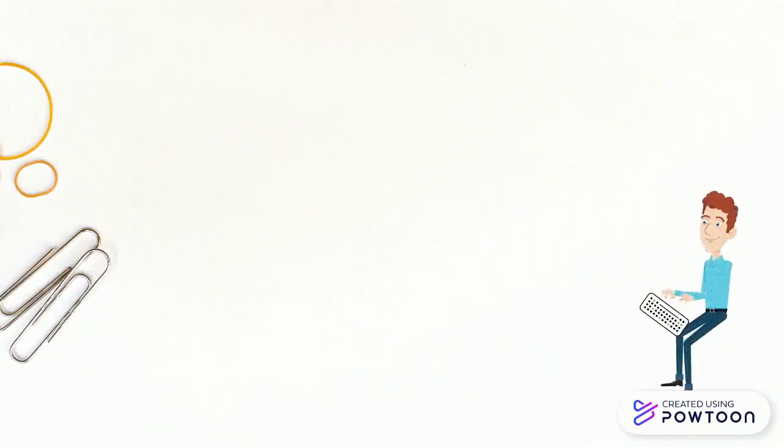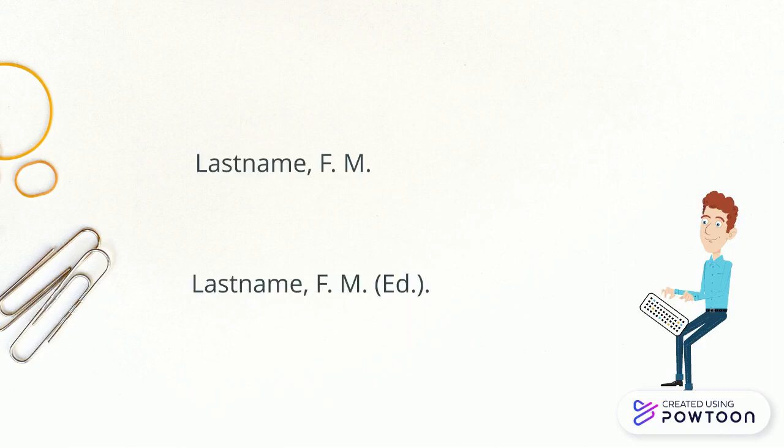First, add the authors or editors' names. Last name, comma, first initial period, second initial period. If the person is an editor, add a capital ED period in parentheses after the name with another period at the end. Editors gather and select content for books that they do not write themselves.